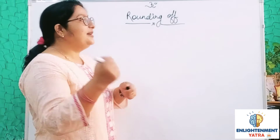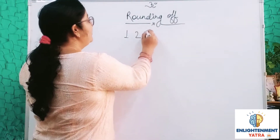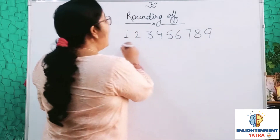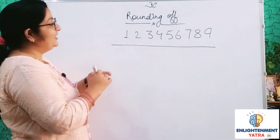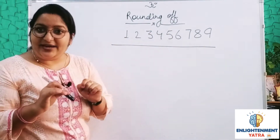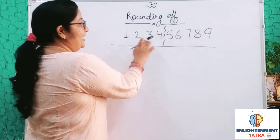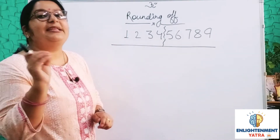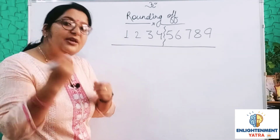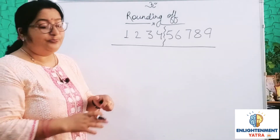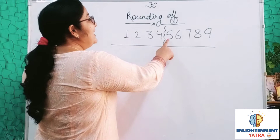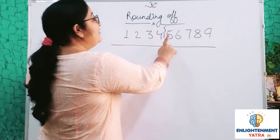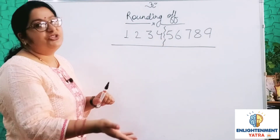The first rule: hum numbers 1 through 9 ko do groups mein divide kar lete hain — 1, 2, 3, 4 ek group mein aur 5, 6, 7, 8, 9 ek group mein. Ye ek simple technique hai jo main aapko sikha rahi hoon aur kisi bhi rounding off number mein aap is technique ko use kar sakte hain. Jab kabhi bhi aapka number less than five aaye, toh aap lower digit pe jayenge. Aur jab aapka number five ya usse zyada aaye ga, toh aap higher digit pe jayenge.